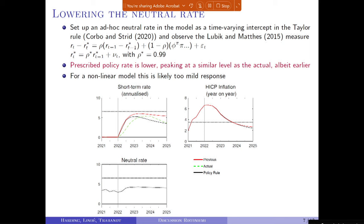With the new Taylor rule based interest rate path incorporating the Lubik and Matthes neutral rate, the rate tends to a much lower level, getting to a lower level at the end of 2025. The result of that very high interest rate path being driven partly by the very high steady state interest rate in the model is confirmed. The neutral rate path goes to around 4.3%, and the new path is now more consistent — maybe with the actual rate, although it rises quicker than the actual rate shown in green.